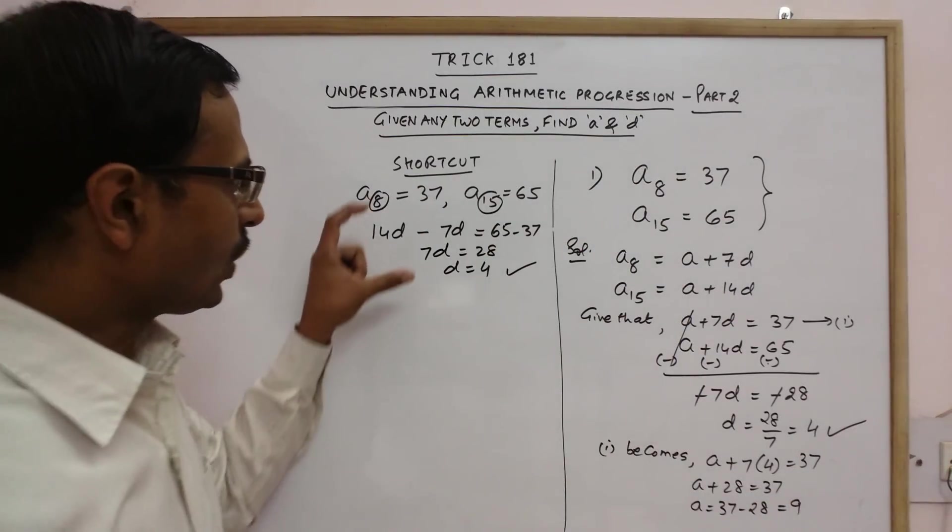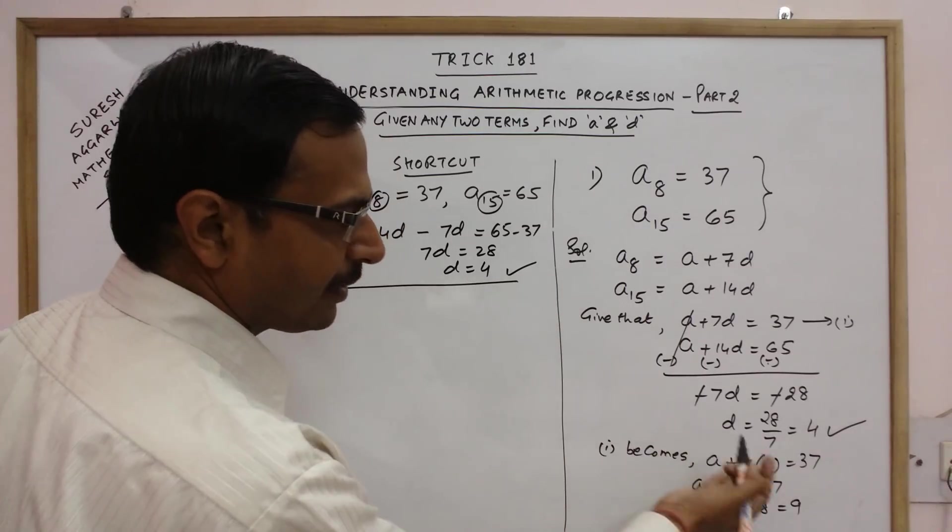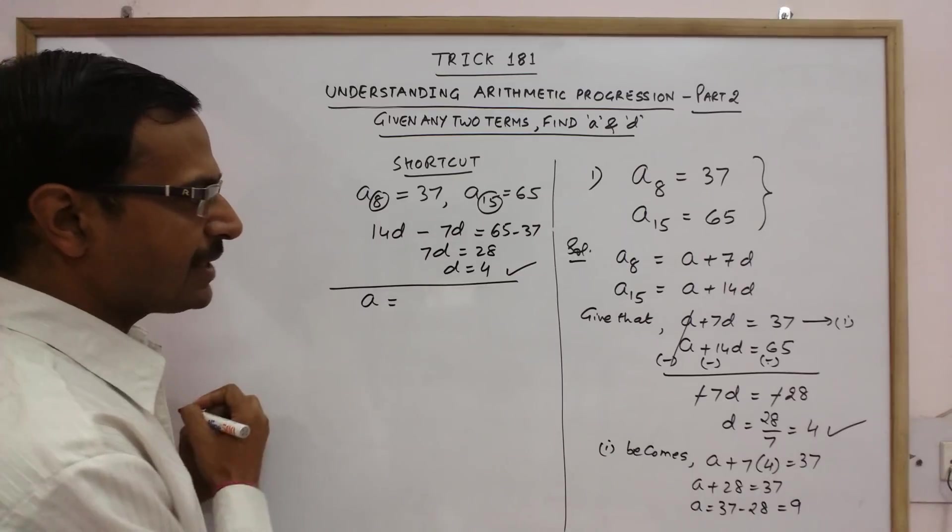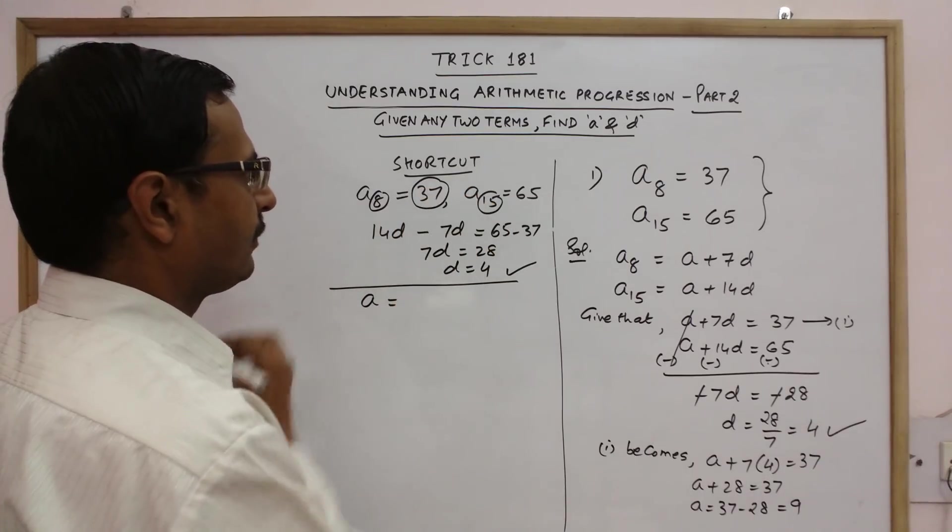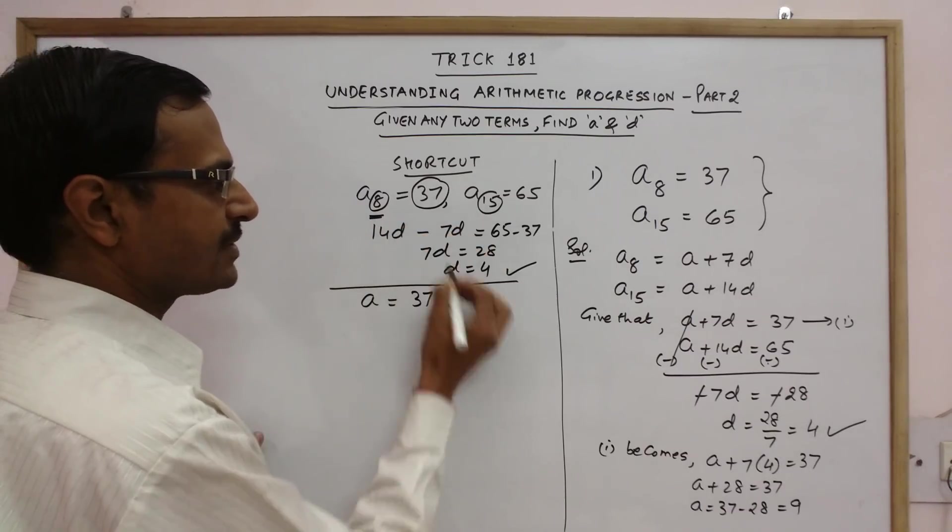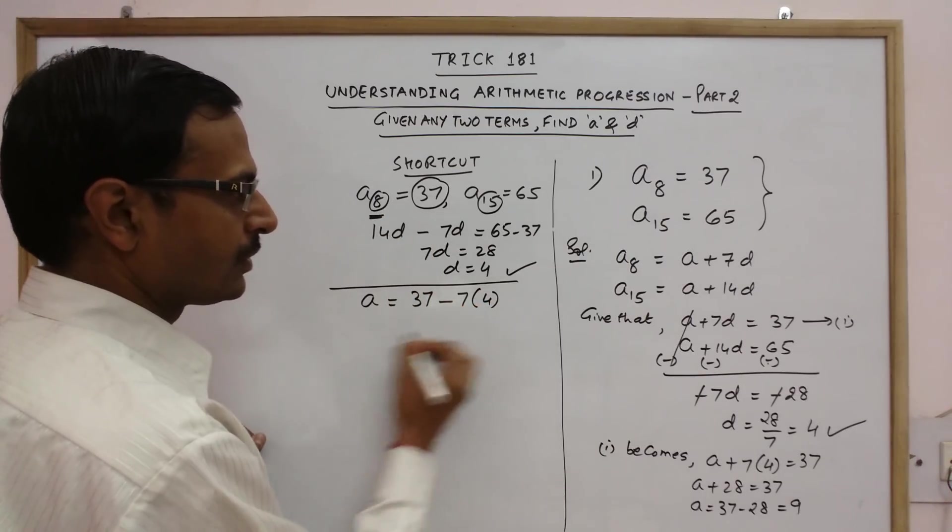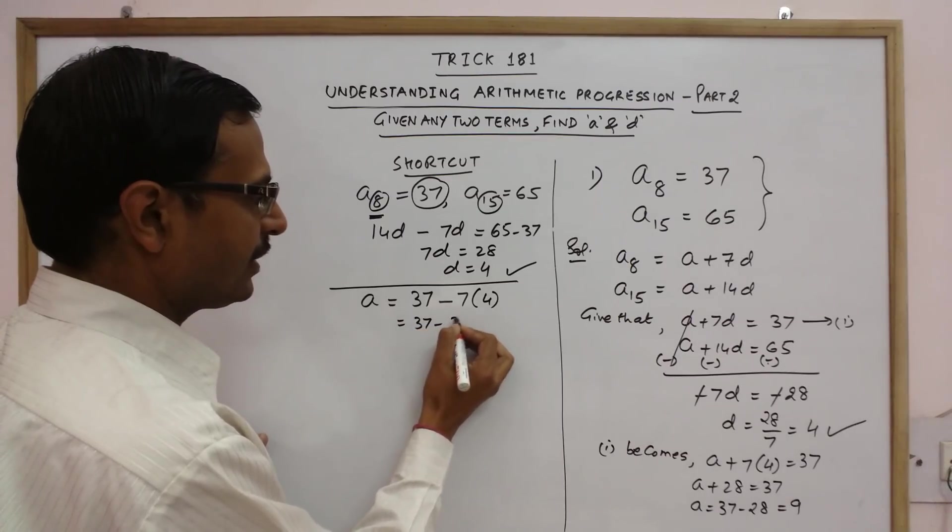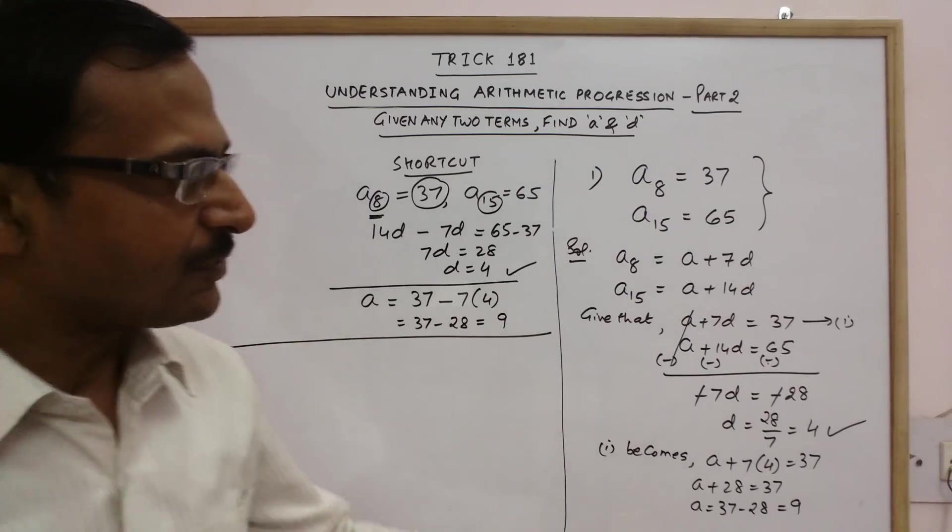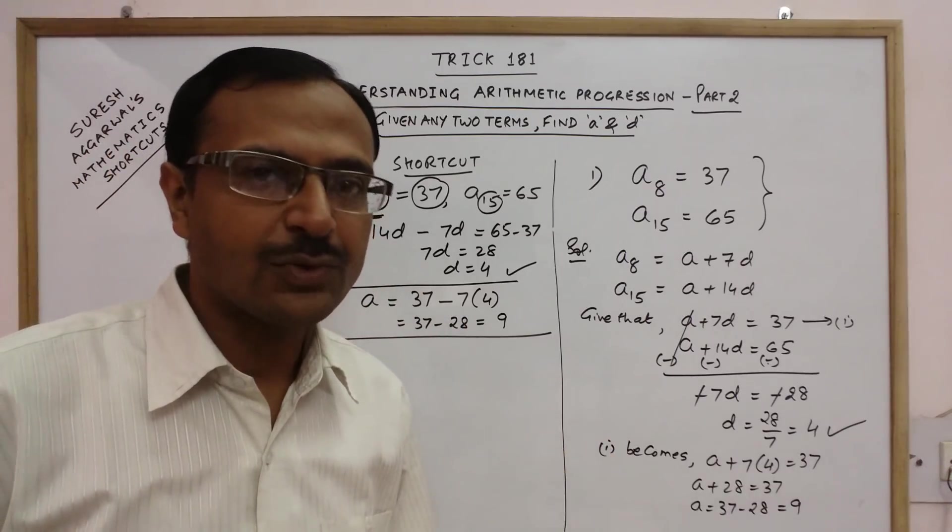Now for finding the value of A we need to do the same steps. So just find the value of A as take this 37 and subtract this 7D from this. So 7 times D, D is 4. So 37 minus 28 that will give us 9. So see the number of steps which we have used in traditional approach and through the shortcut we can find this in 5 to 6 seconds only.